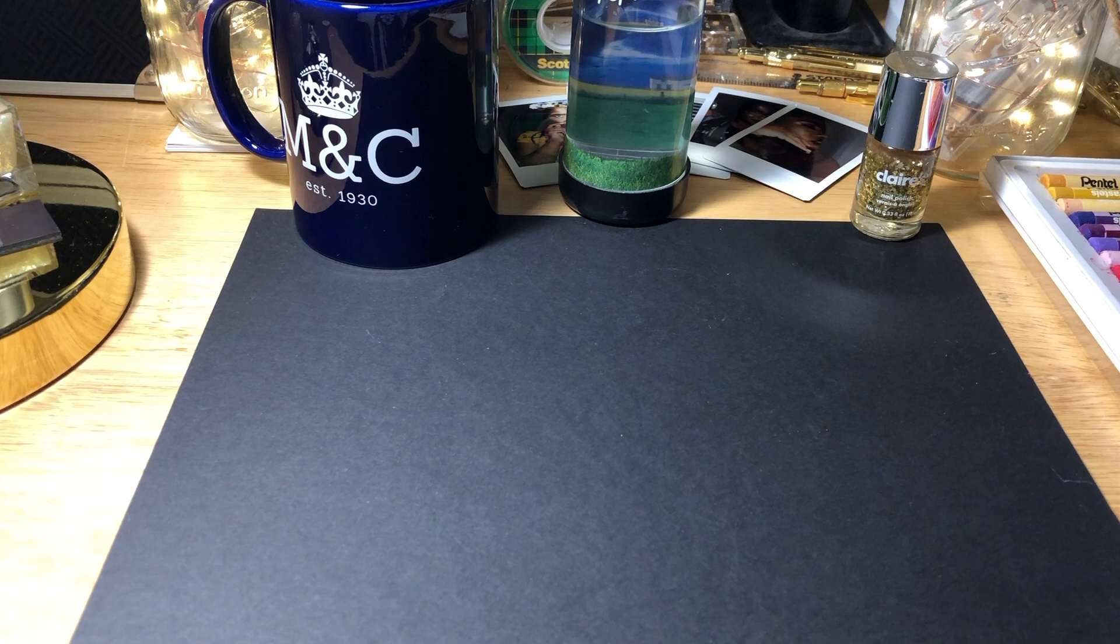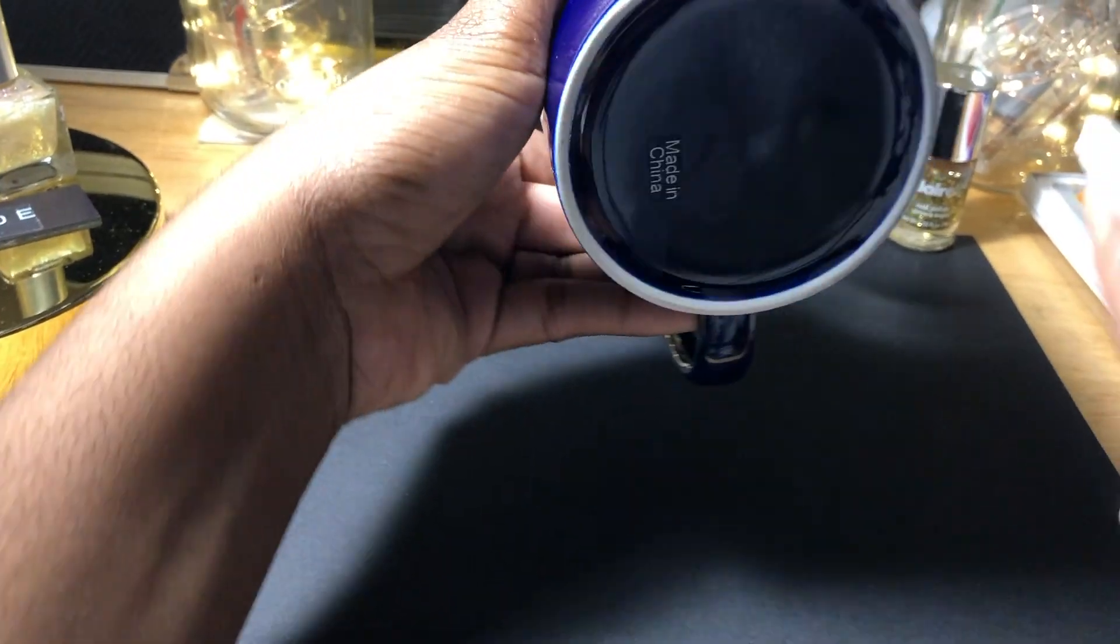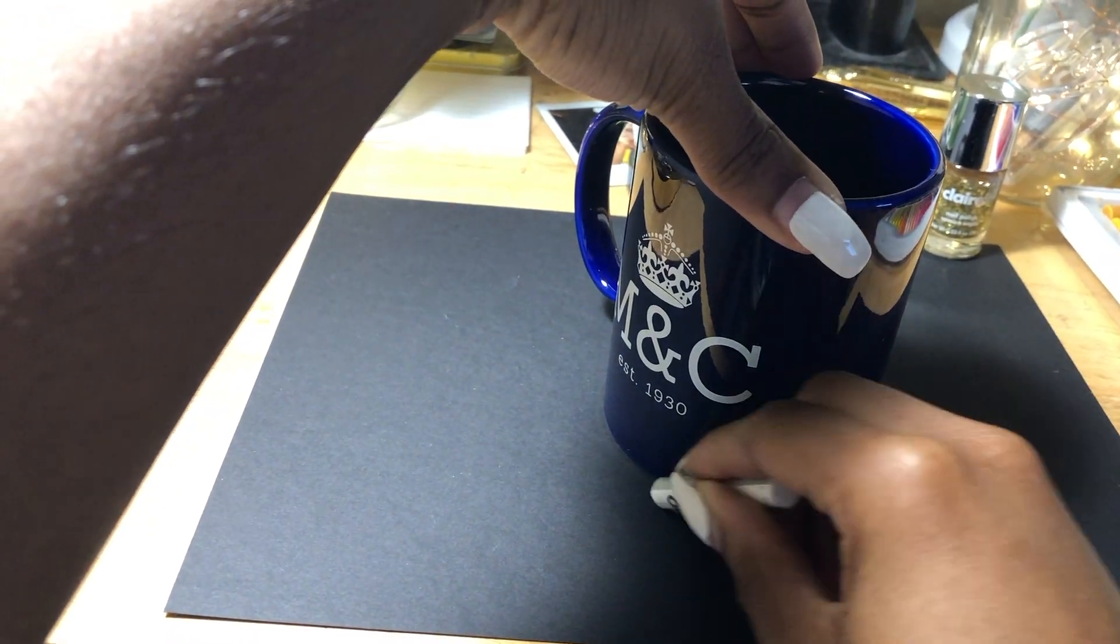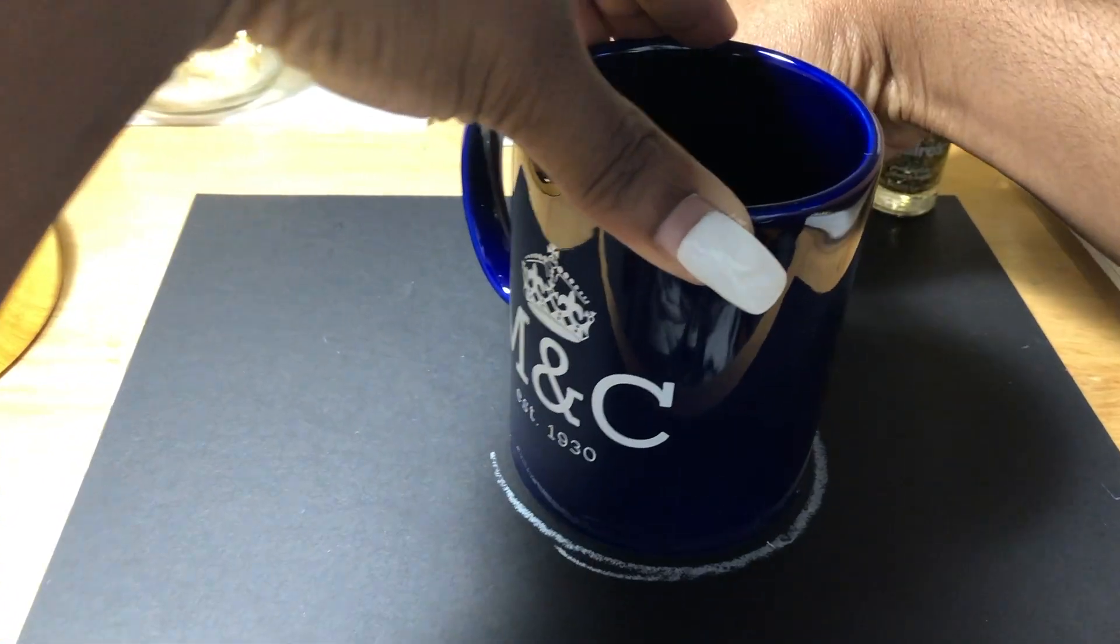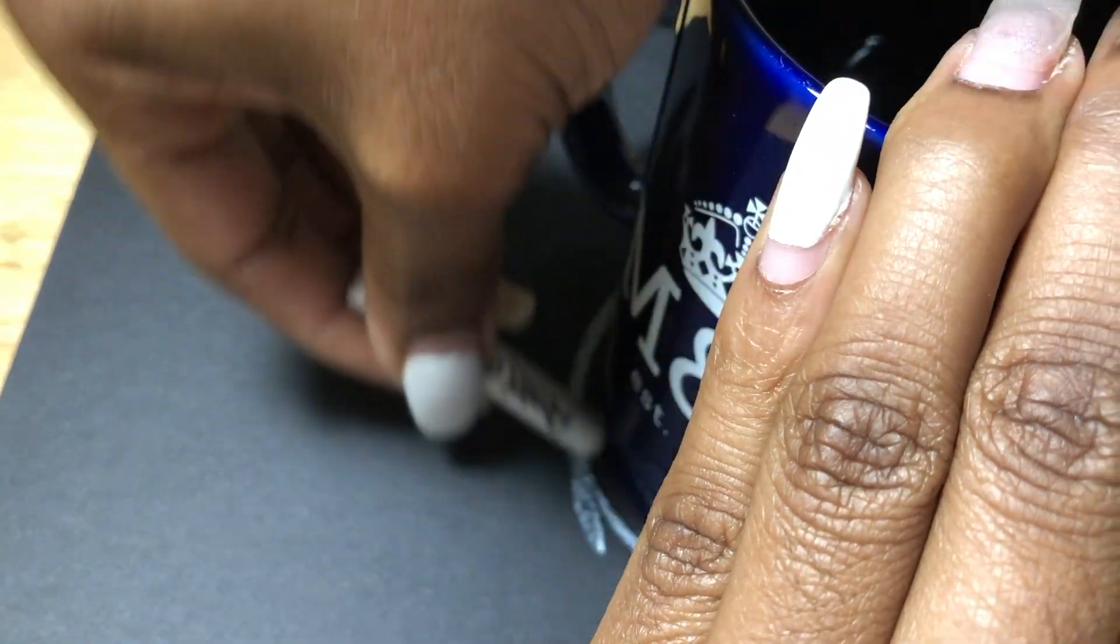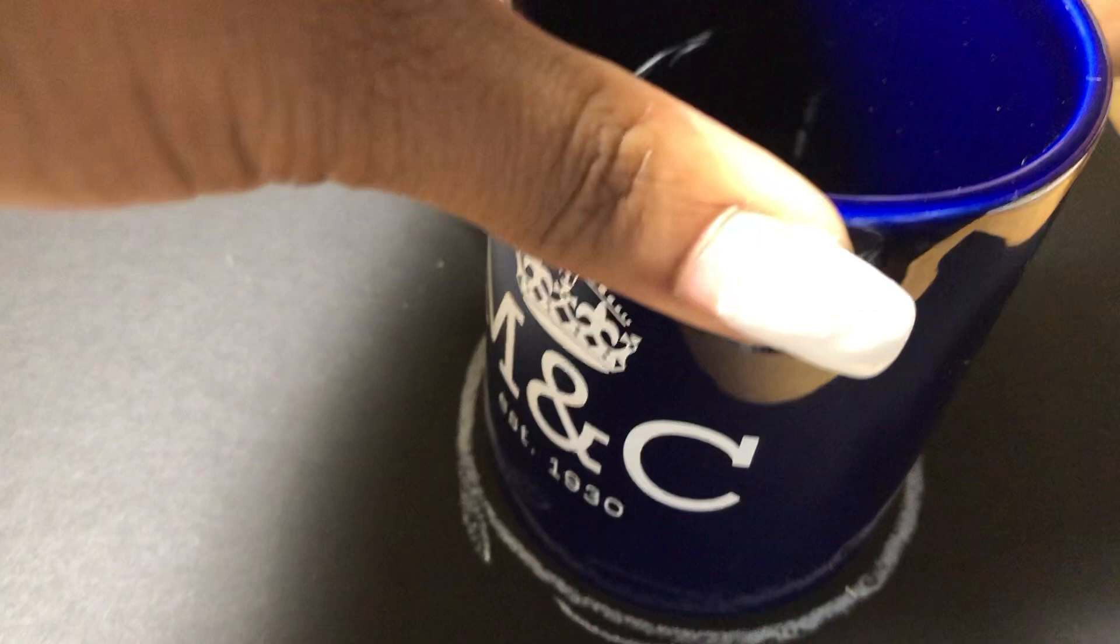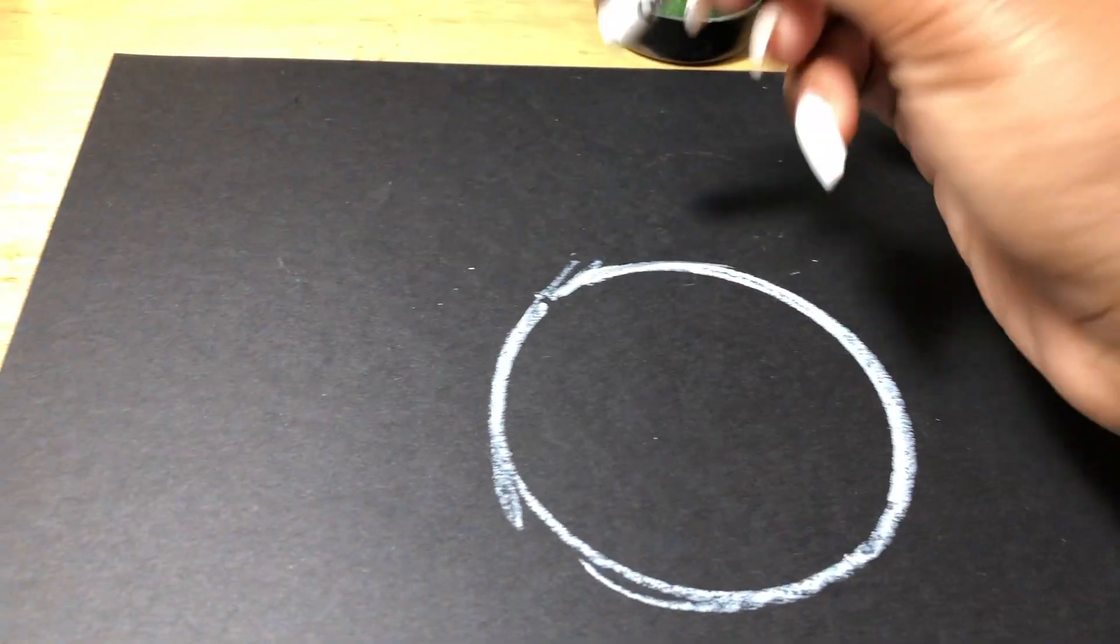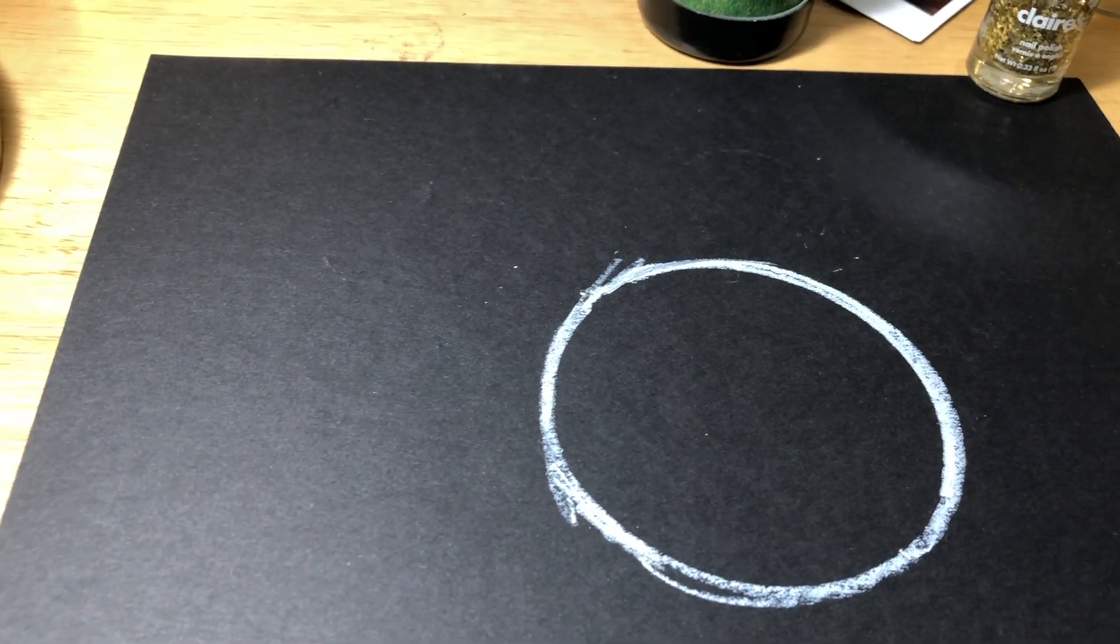First step, I'm going to take my largest circle and trace it. It doesn't have to be perfect. You're going to smudge it later.